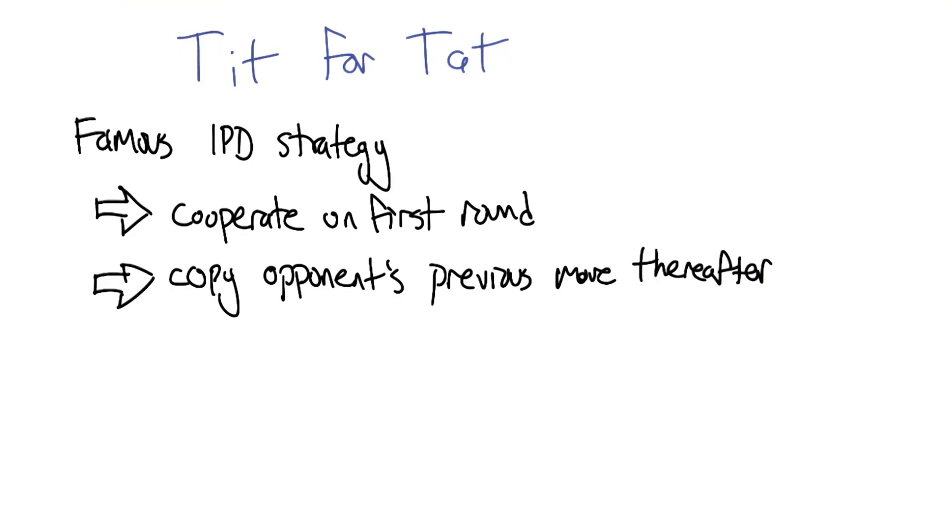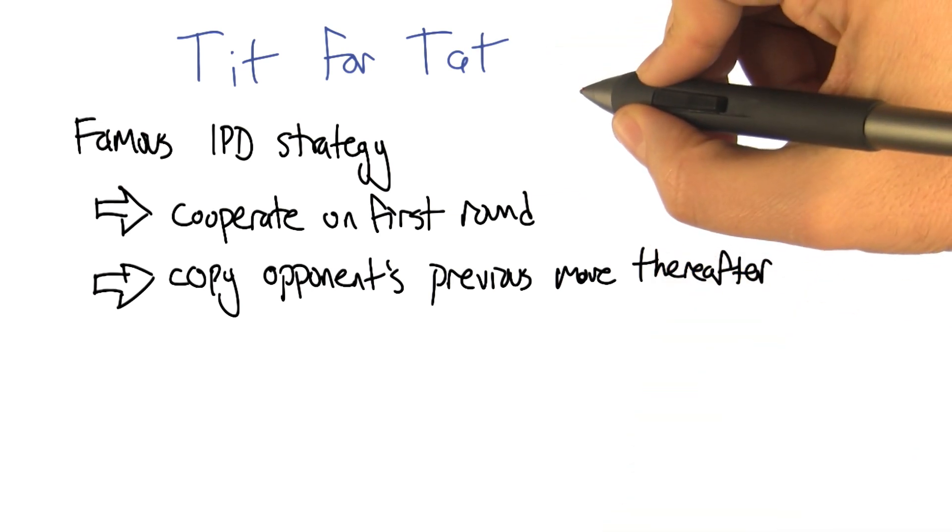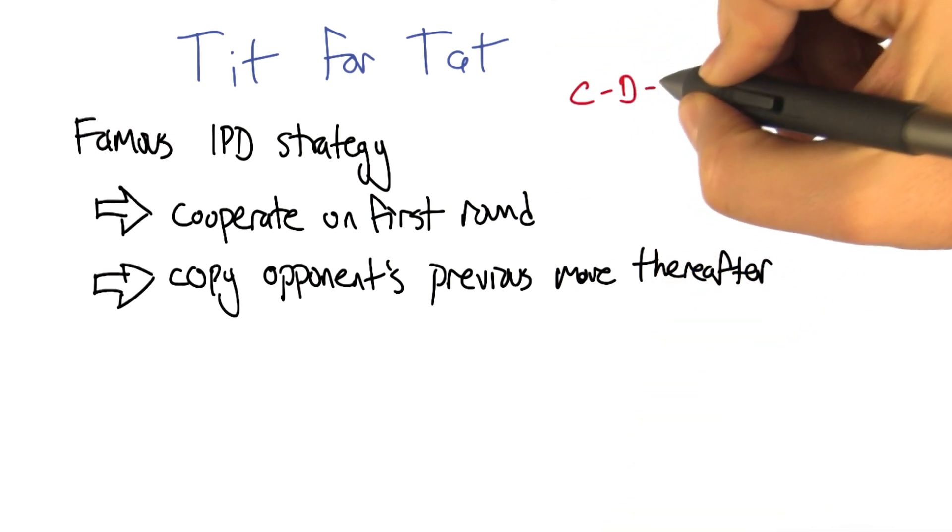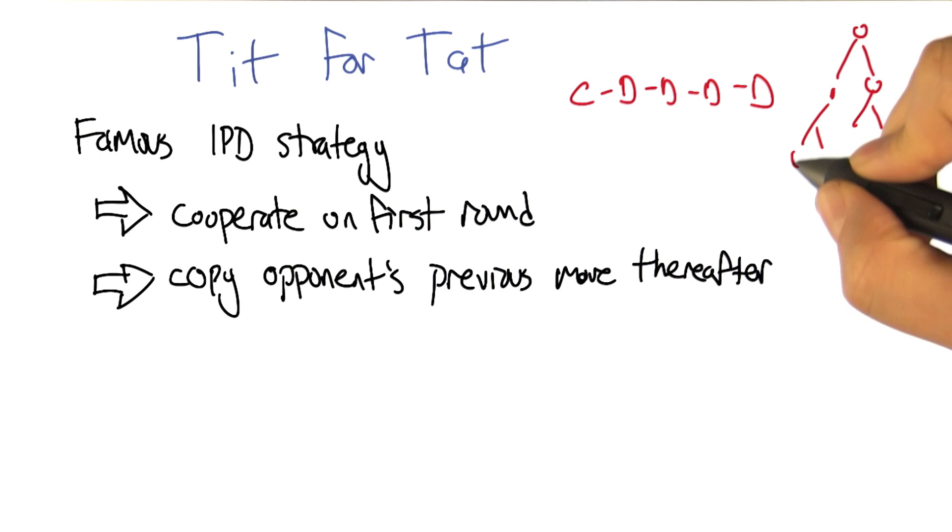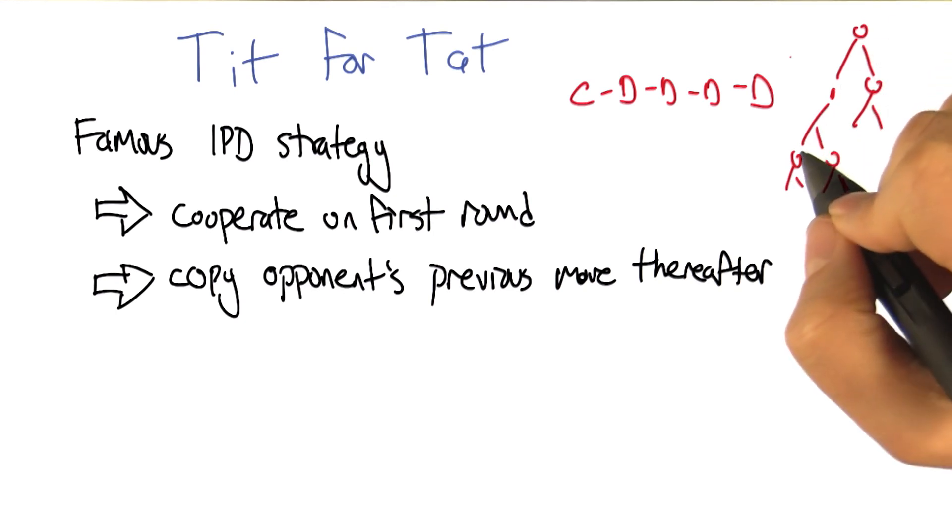If we're going to be talking about strategies in this game that has an uncertain ending, we can't just write down sequences of actions anymore. We can't just say cooperate, defect, defect, defect, defect, or even some kind of a tree of possibilities. Because those are going to be finite representations, we need some other representation that allows us to play for an unbounded number of rounds.